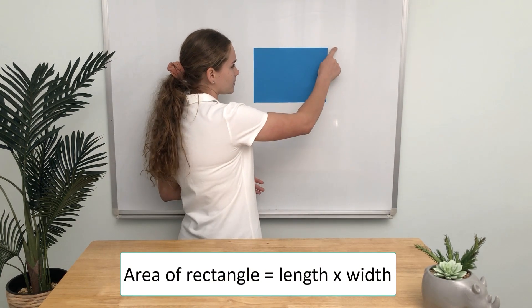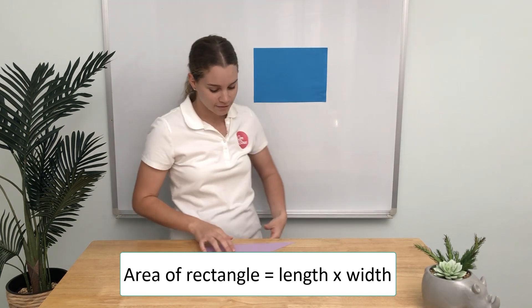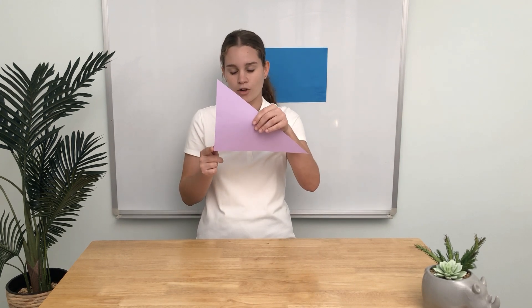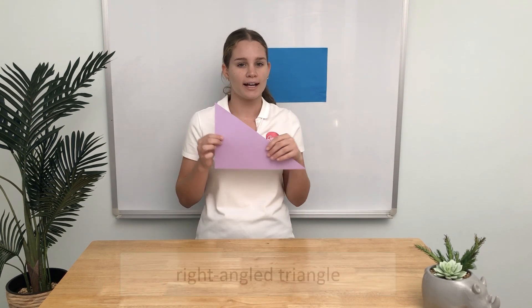Now let's have a look at this triangle. What can you see just by looking at it? Well, we can see that it has a right angle, so this is a right angle triangle.